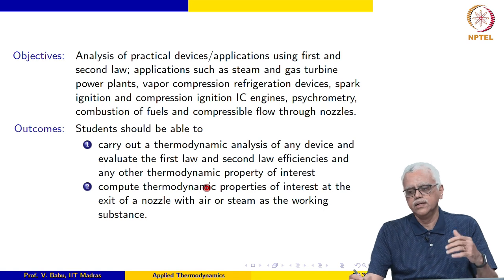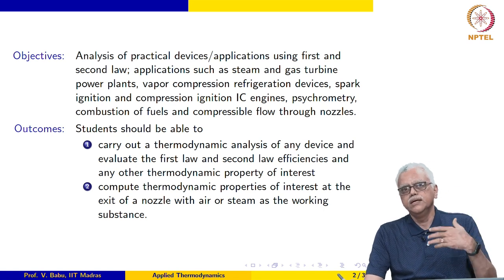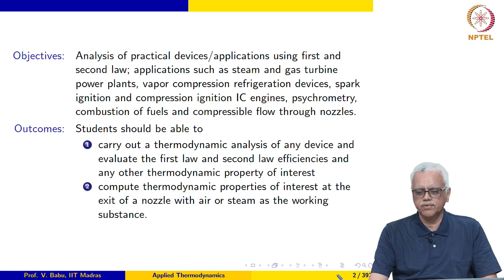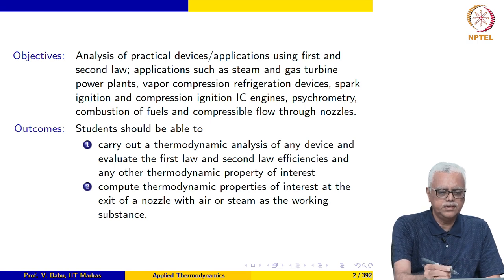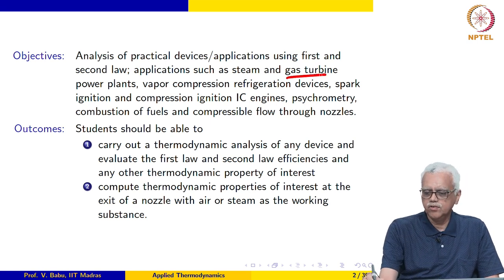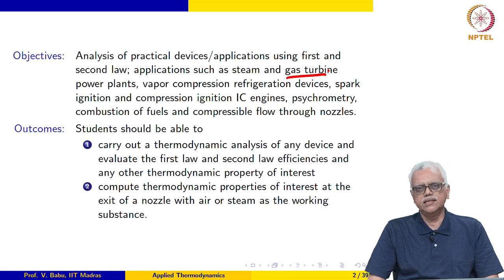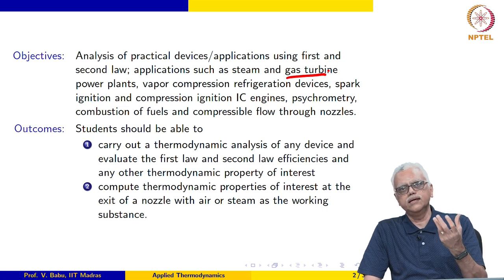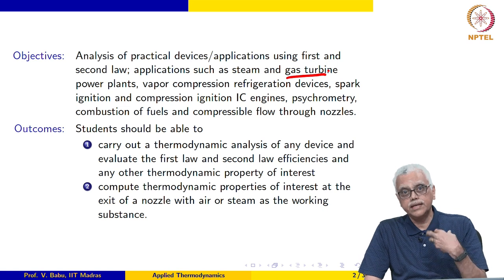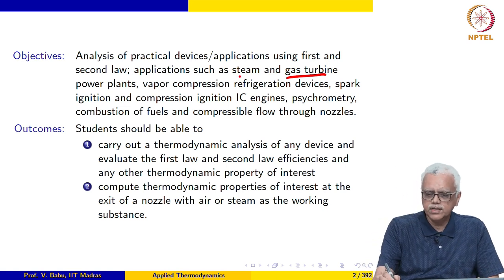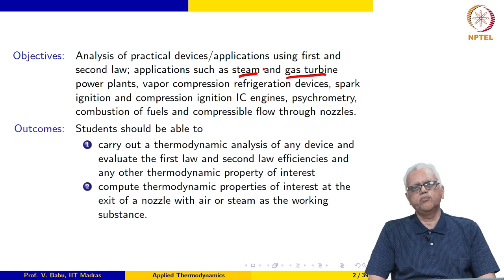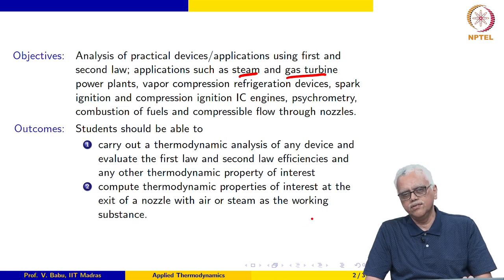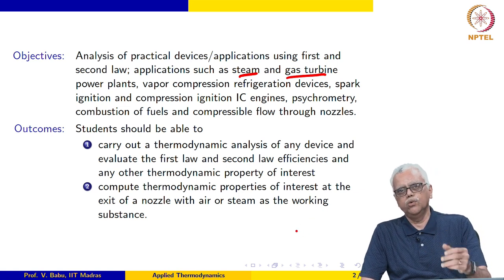For the steam turbine, we will look not only at the basic steam turbine but also at variations of the Rankine cycle. In the case of the gas turbine, we will look at not only the basic gas turbine cycle but also advanced versions — for example, the Brayton cycle with intercooling, Brayton cycle with reheat, and Brayton cycle with regeneration. Similarly for the steam power plant, it will not be just the basic Rankine cycle but also Rankine cycle with superheat, regeneration, reheat, and so on.